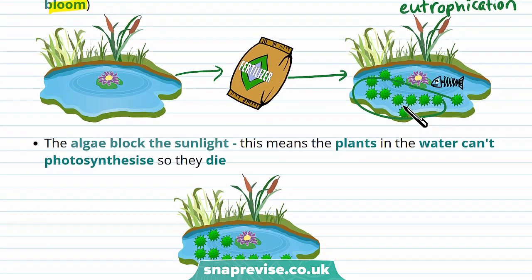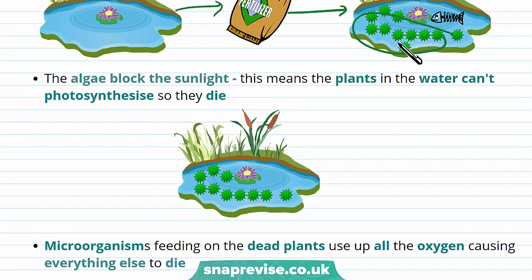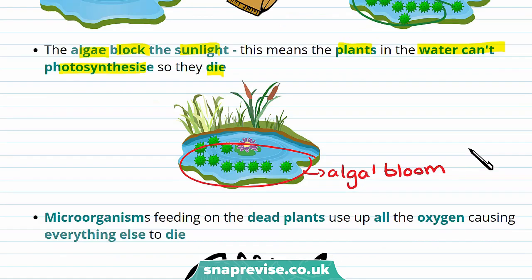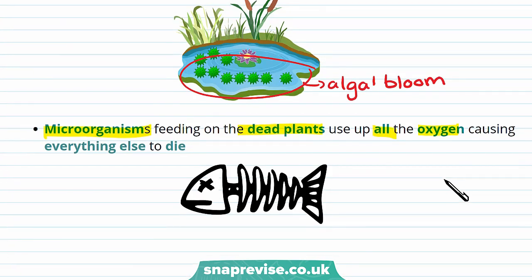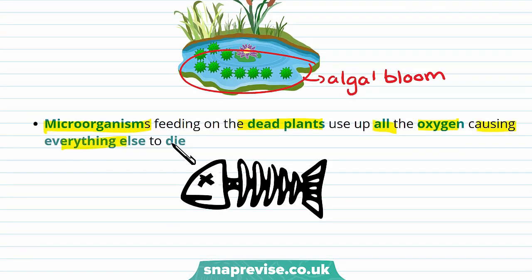The fertilisers encourage the growth of algae, and the algae block the sunlight. This means that plants in the water can't photosynthesise because they don't receive enough light, and they die. When the plants die, microorganisms feeding on the dead plants use up all the oxygen. This causes everything else in the water to die, because organisms need oxygen for aerobic respiration. Water pollution can therefore have a huge effect on lakes and rivers.